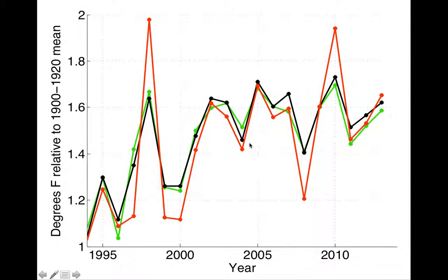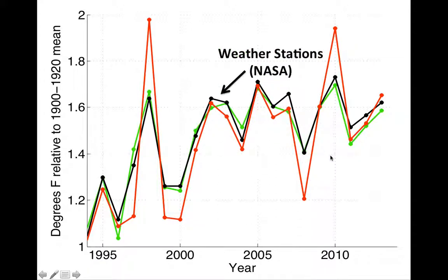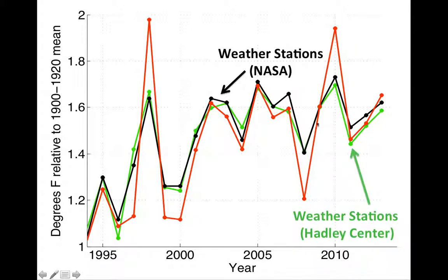So when we talk about the pause in global warming, what are we actually talking about? Here I'm graphing temperature change from 1996 to 2013, showing three different estimates of how global temperature has changed over that time. The black line is an estimate from NASA — weather stations compiled from across the surface of the planet. There's another estimate from the UK's Hadley Centre, and the red line is an estimate from satellite observations. All three show the same general ups and downs and short-term trends.